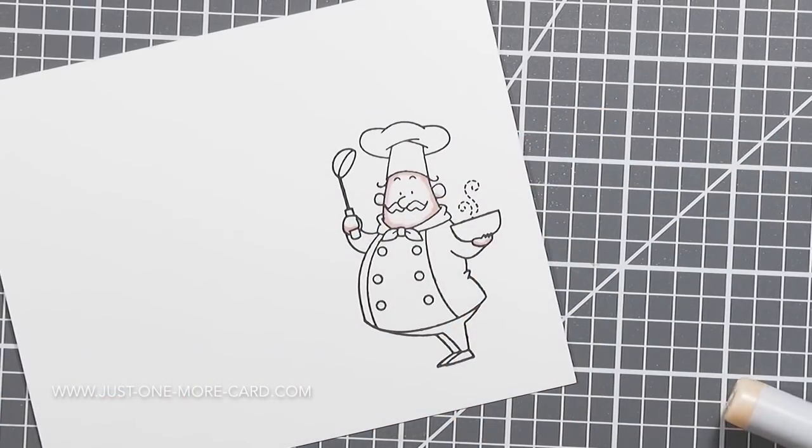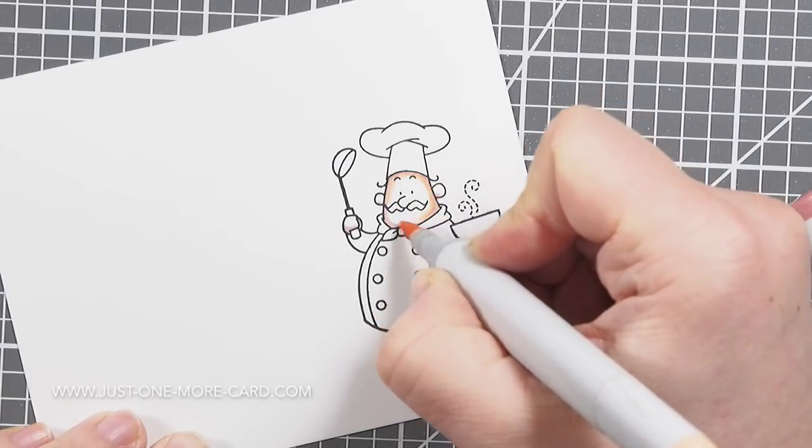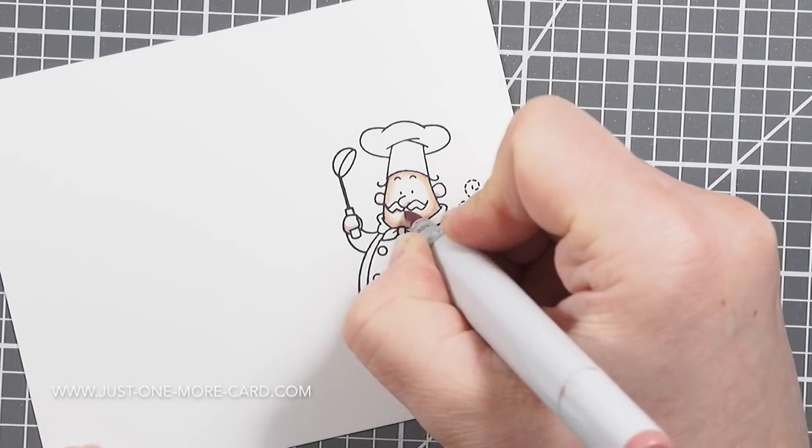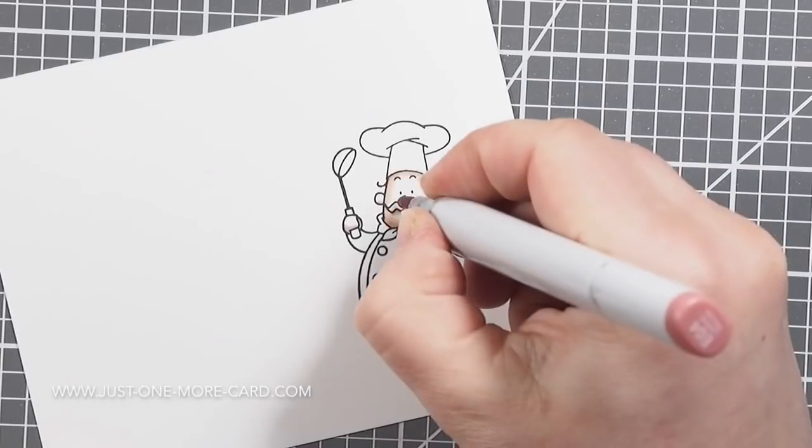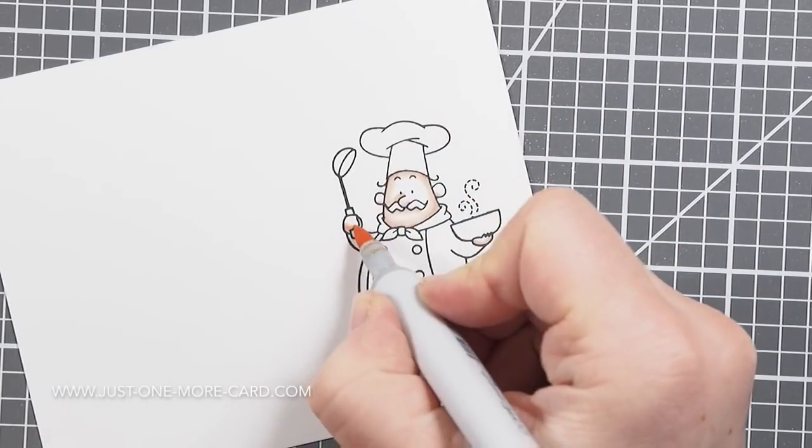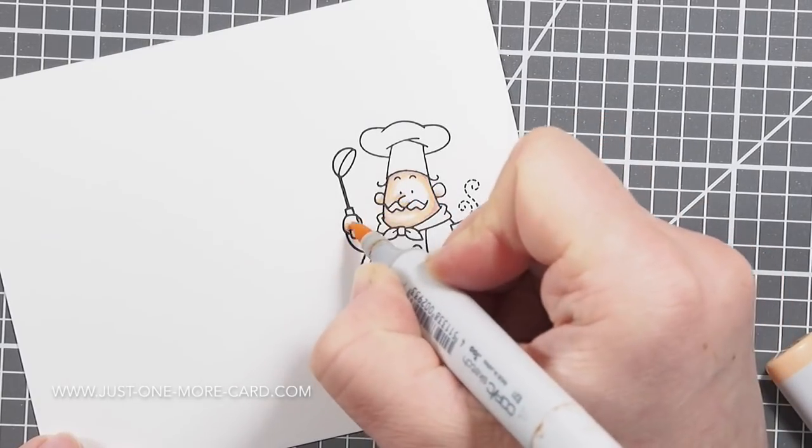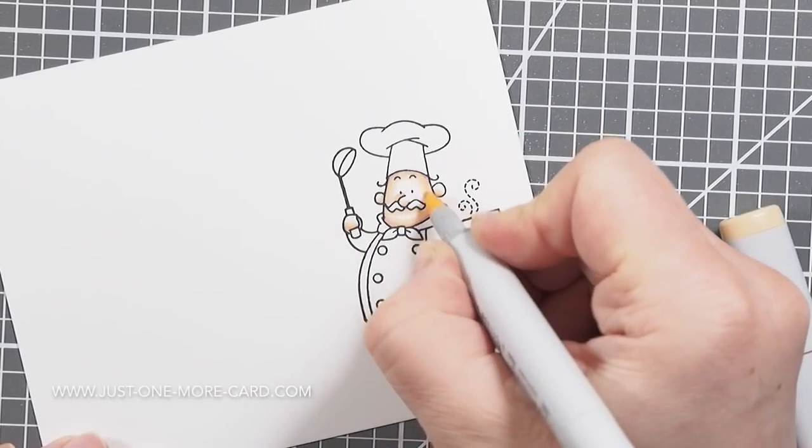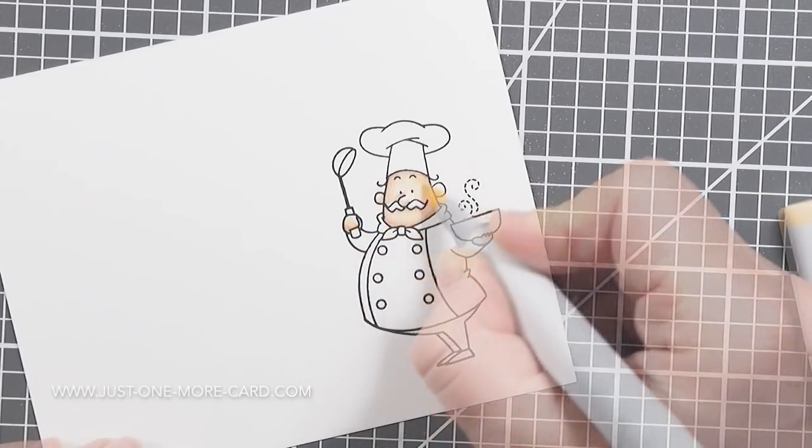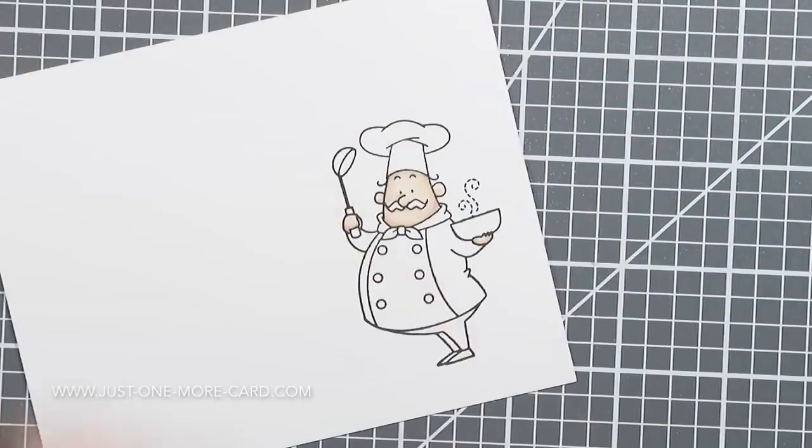For coloring, I like to use mainly Simon Says Stamp heavy cardstock because I find that it accepts Copic ink quite well. In addition, it doesn't feather. Feathering means that if you put down a lot of ink, the ink starts to seep off to the side, so it goes beyond the stamped lines.